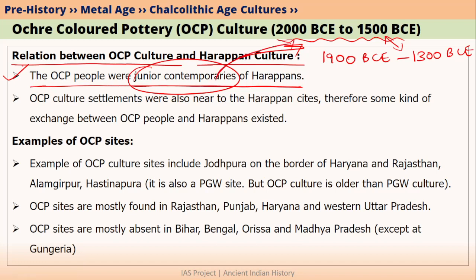OCP people were technologically backward compared to Harappans because Harappans were Bronze Age people, whereas OCP people were Chalcolithic Age or Copper-Stone Age people. Moreover, some OCP culture sites also existed near Ganeshwar Jodhpura culture, which was very close to the Harappan or Indus Civilization region. That is why we can say that some kind of exchange could have happened between OCP culture people and Harappan people.